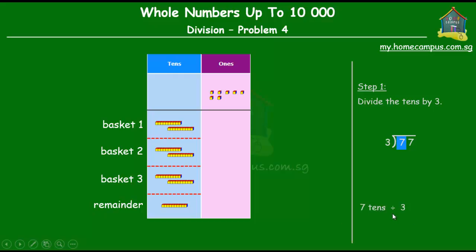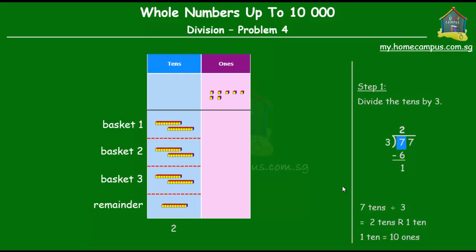Seven tens divided by three equals two tens with a remainder of one ten. Looking at the working: three times two gives us six, and seven minus six equals one. This two tells us each basket has two tens, and this one tells us there is a remainder of one. Each basket has two tens, and the one ten that is left — we take that, break it up into ten ones, and use those ten ones in the next step.